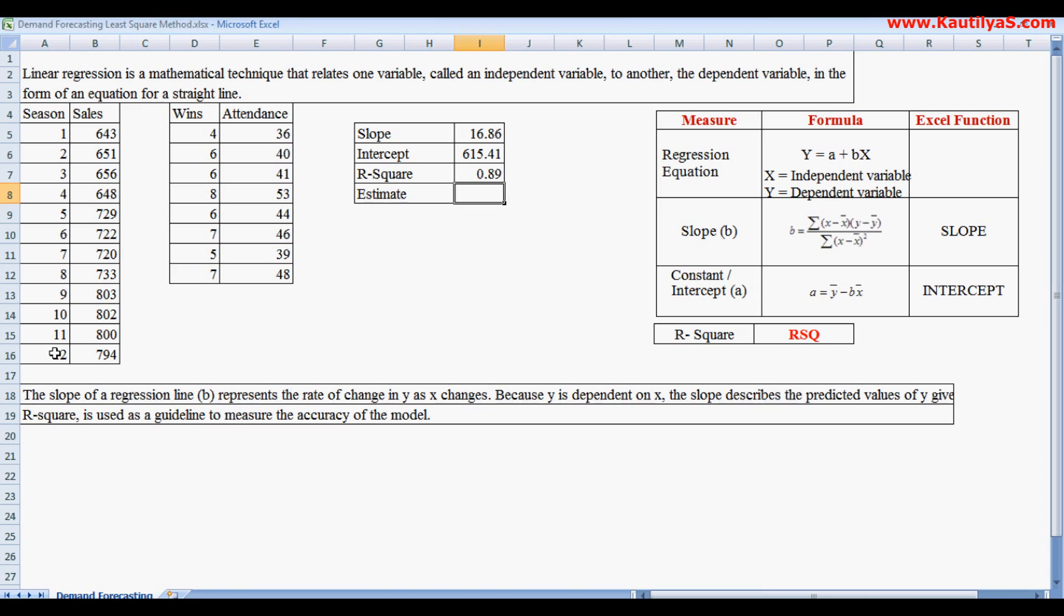89 percent of the dependent variable can be explained by the independent variable. So 89 percent of the times, the independent variable has influence on the dependent variable, meaning the association is strong.